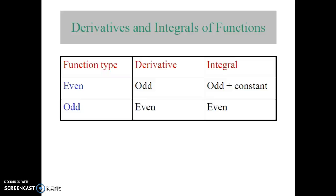For the difference of even and odd, the same condition applies. For the product, the resultant signal is odd. If the function type is odd and you perform the derivative operation on it, you can get the resultant signal as even. And if you integrate the odd function, you can also get the resultant signal as even.